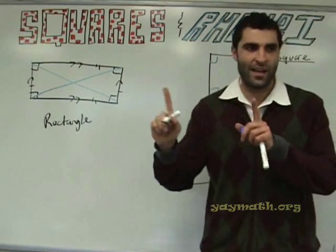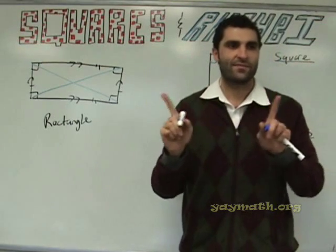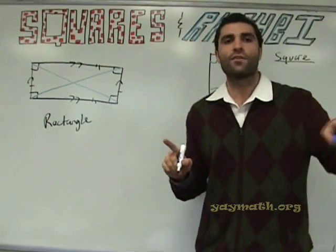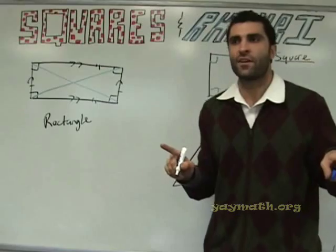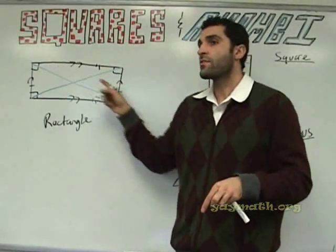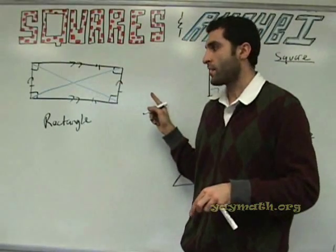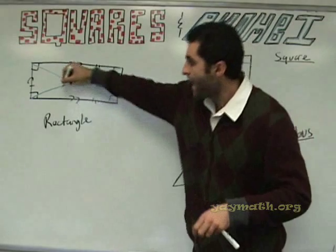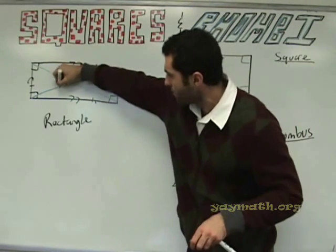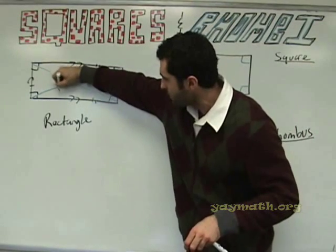So that's a difference. Hold that thought — that's a very good thought. So for now: diagonals are congruent, and they bisect each other.